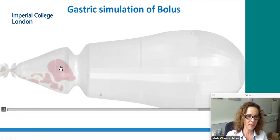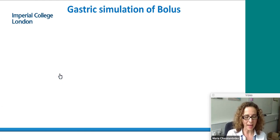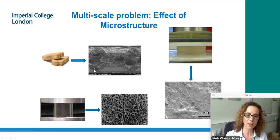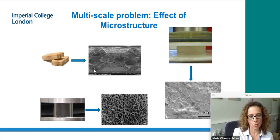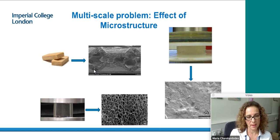So far in all the examples shown, we treated the food — whether the bolus in the gastric model or the material in industrial processes and chewing — as a uniform material. However, many of these foods, when looked at under the microscope, have very intricate microstructures, and this microstructure impacts the material properties that go into the computational models. What we want to do is go to a smaller scale and study the effect of the micro-scale on food mechanical properties, which are then fed into the larger-scale model — bridging these two scales.